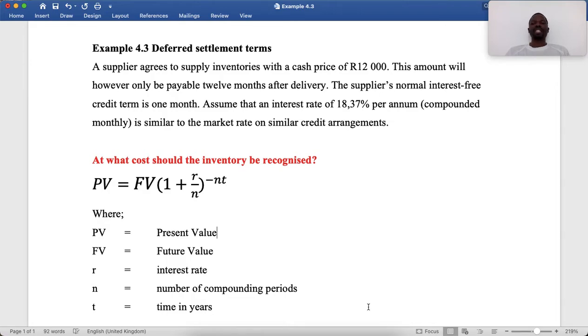Let's go to the example. A supplier agrees to supply inventories with a cash price of $12,000. This amount will however only be payable 12 months after delivery.